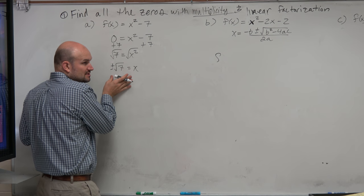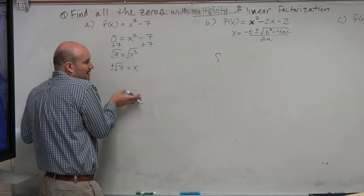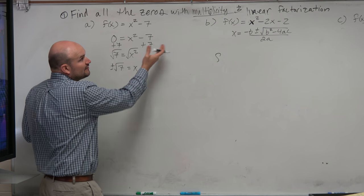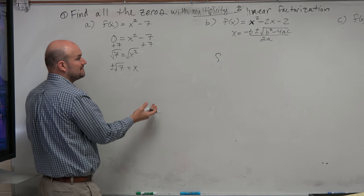So there are my zeros. But again, this brings us to our question: if these are zeros, then what is the linear factorization and what is the multiplicity? How can I do this?